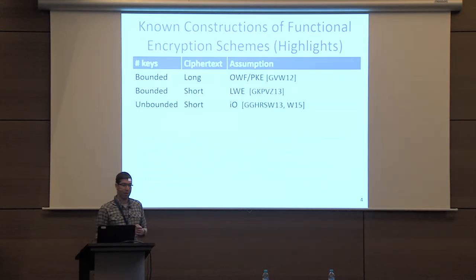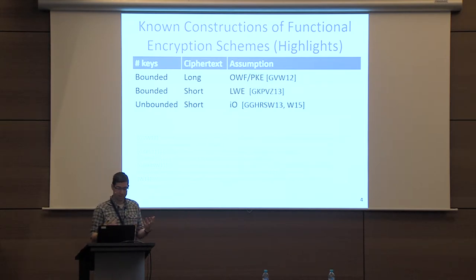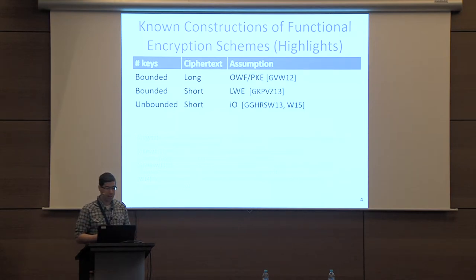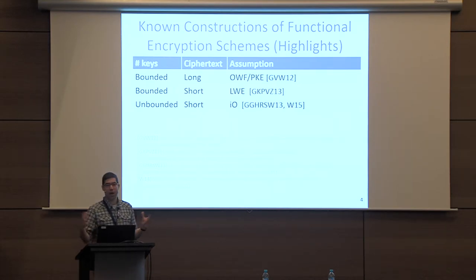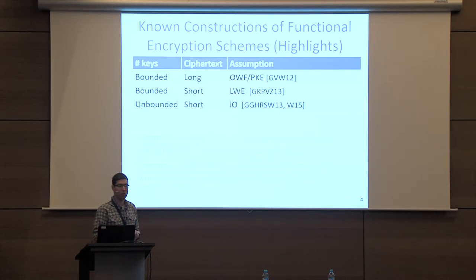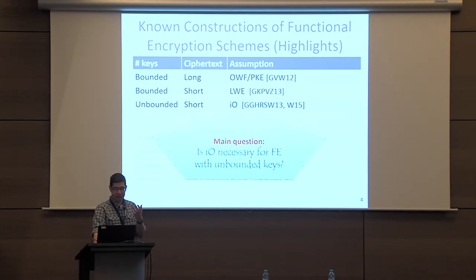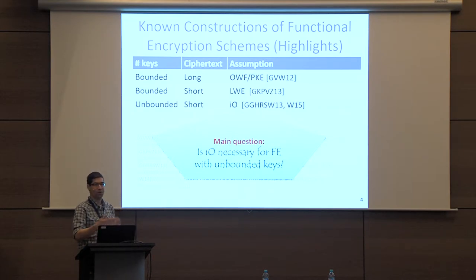What do we know about this primitive? The highlights are three constructions. There's a simple construction using garbled circuits that gives a bounded number of functional keys with long ciphertexts; in the private key setting this is based on any one-way function, and in the public key setting on any public key encryption scheme. From LWE we can get shorter ciphertexts. And the perfect construction based on I.O. gives an unbounded number of keys with very short ciphertexts. The question we care about is: is I.O. necessary to construct functional encryption with an unbounded number of keys?